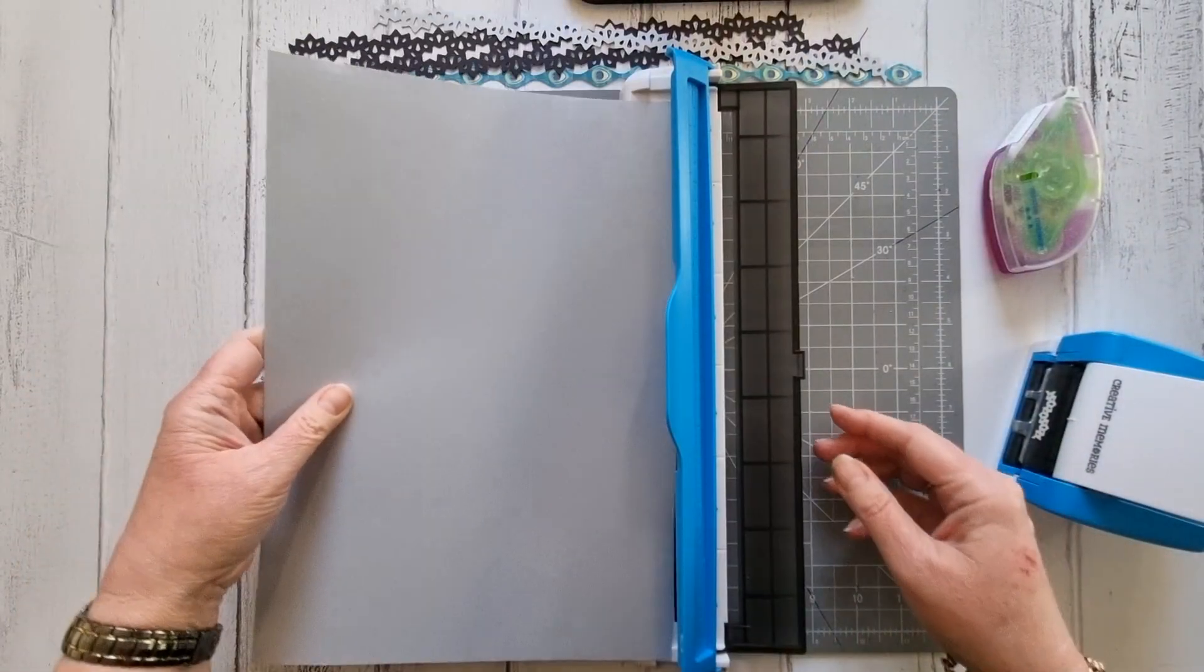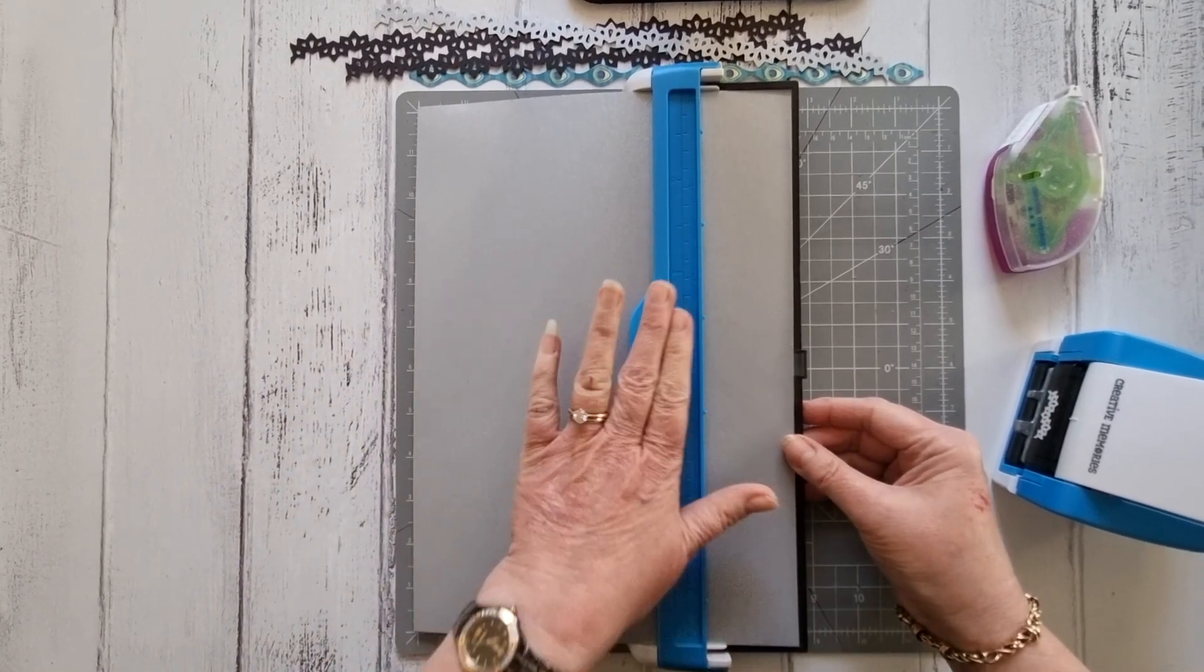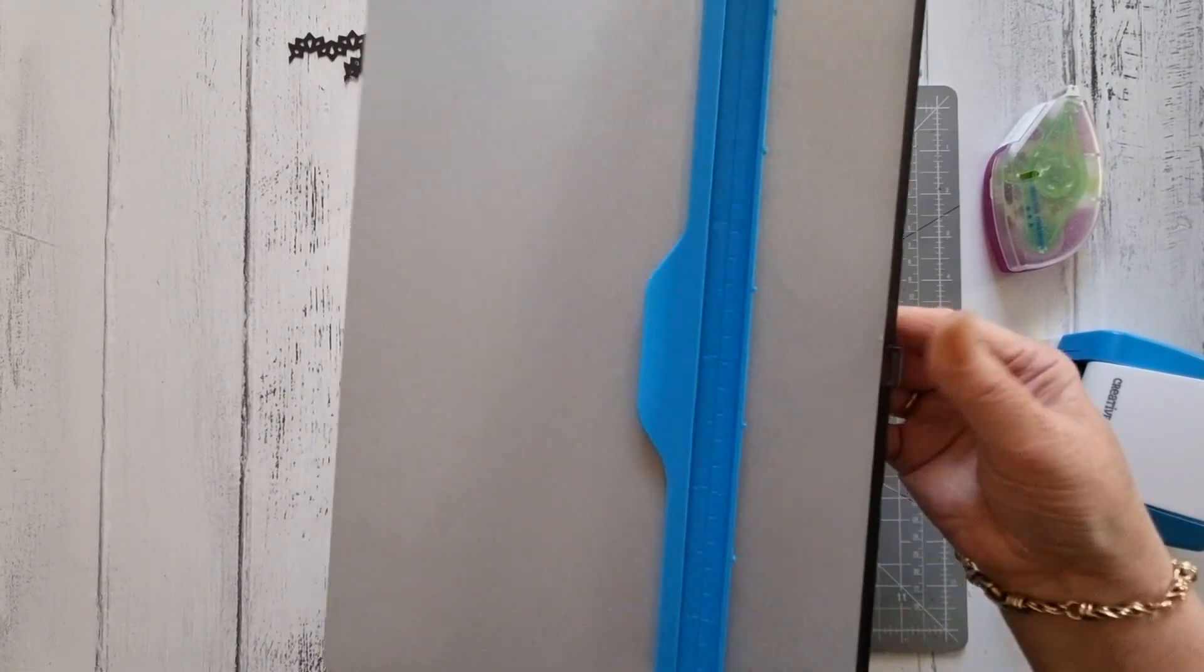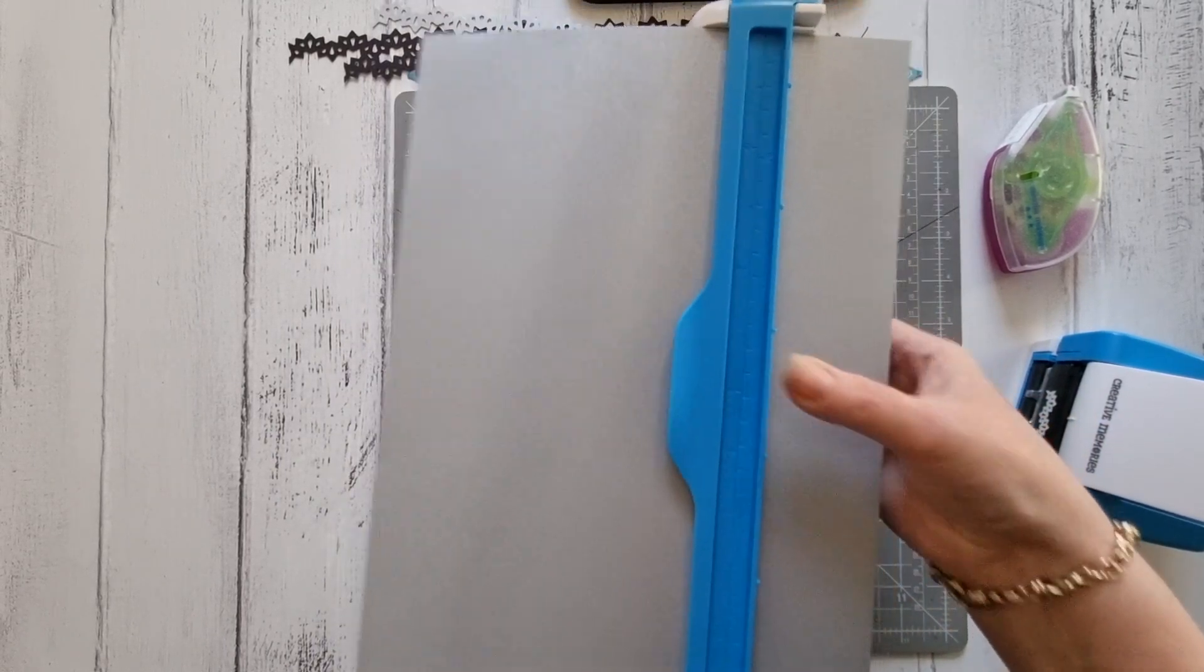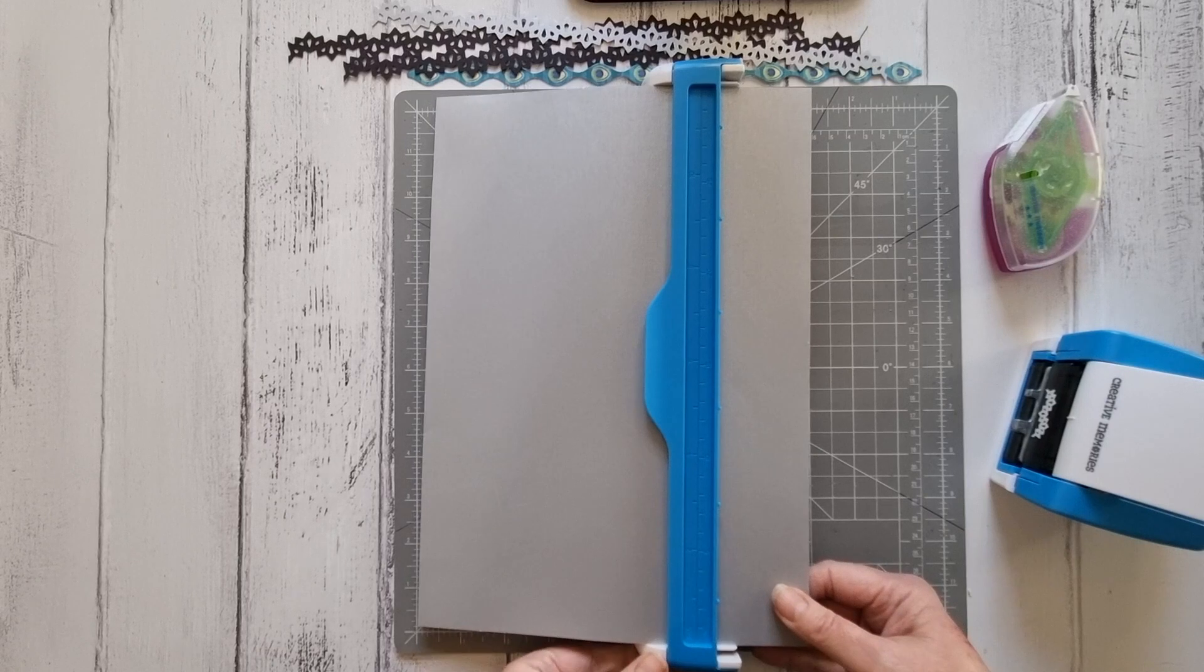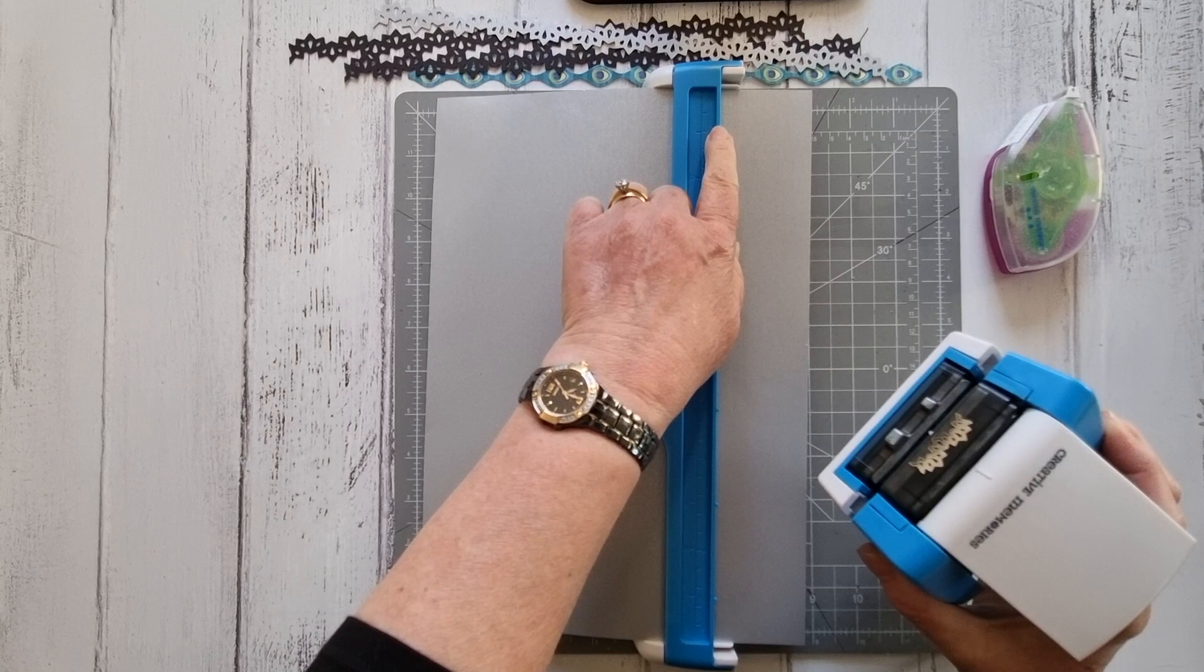Take your card stock and slide it in, hold down your guide, and take your back piece and fold it back. Then this little notch here is going to line up with all the notches on your guide.